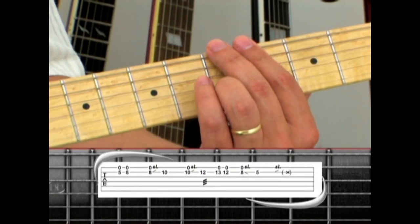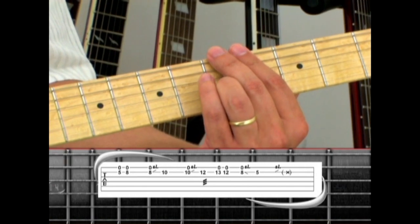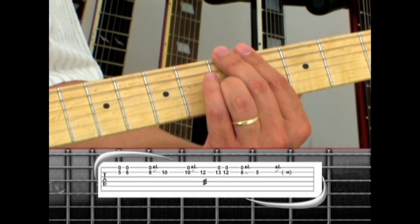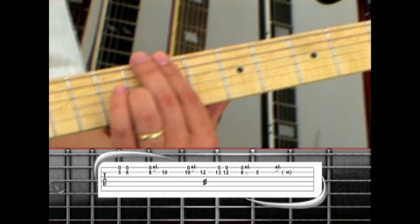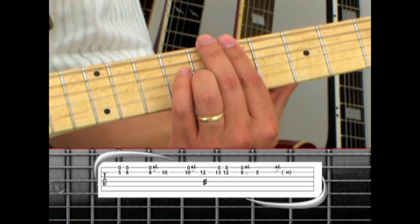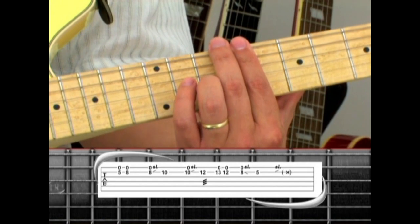Phrase five starts out with the same second string fifth fret with open first string drone note. Move up to eight. Eight again, slide to ten. Pick ten, slide to twelve.